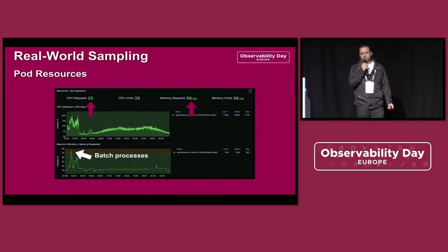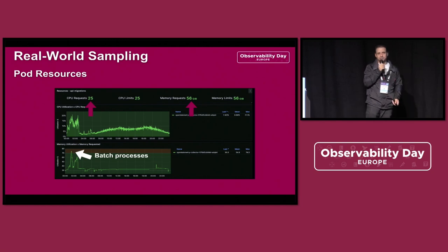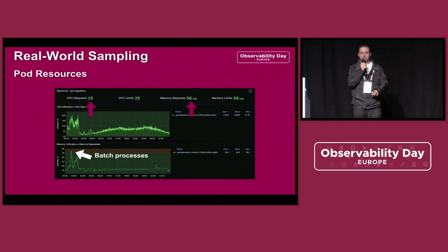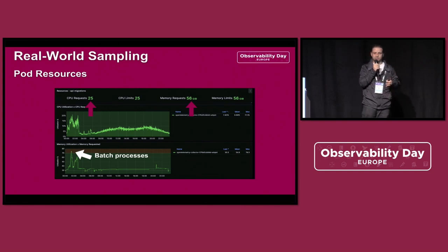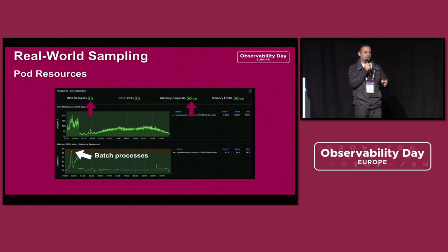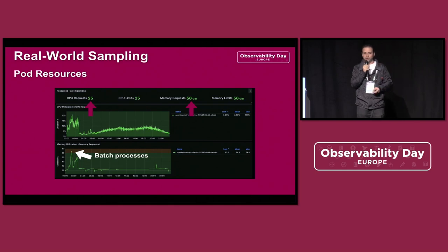The trade-off here is that the OpenTelemetry collector instance needs to be large. There are reasons for this: we have batch processes that run during the night where the collector needs memory to handle that volume, and in case of incidents we store more traces, so it's necessary to have memory available for the collector to handle the volume.